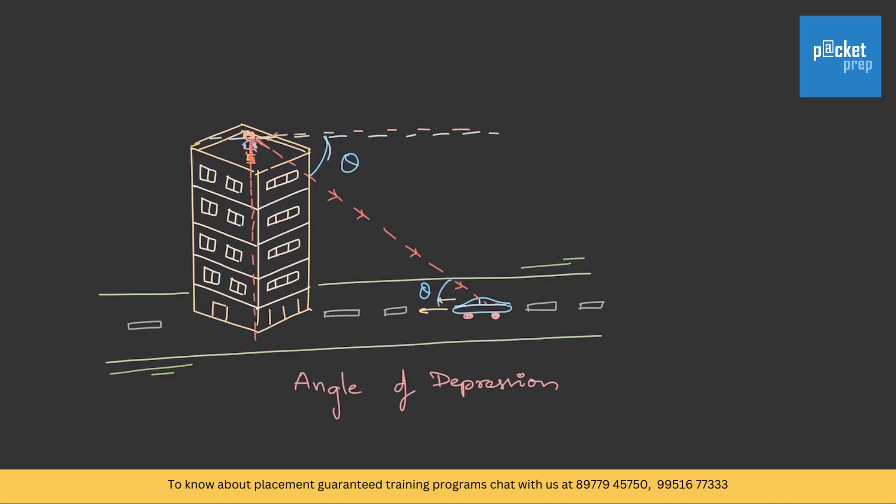Again here, we will be drawing a triangle and we will be taking the horizontal view as the reference. From that, if we come down by an angle, the theta is called angle of depression. By the rules of transversal, if this is theta, even this is also theta.